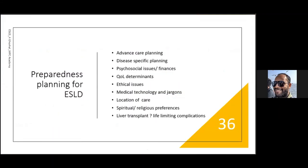Preparedness planning for ESLD includes: advanced care planning and disease-specific planning, discussion of psychosocial issues and finances, quality of life determinants, ethical issues around transplantation and consent, avoiding medical jargon with patients and caregivers, discussing location of care (home vs. hospice vs. hospital), spiritual and religious preferences, and the important message that liver transplant is not the answer to every problem — life-limiting complications can occur even after transplant.